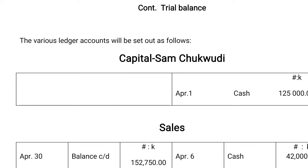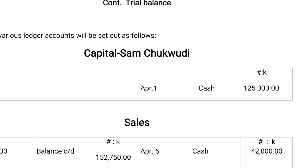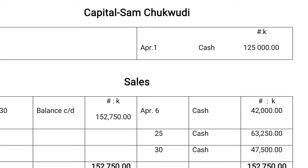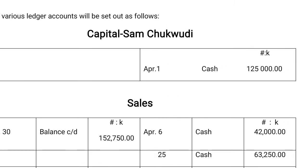If you look at the cash book, we have the capital, sales, Musa, and the lights under the debit side. And at the credit side as well, we have particular furnitures and fixtures, purchases, Musa, wages, and sundry expenses. Now, to prepare our various ledgers, we must bear in mind that all the postings at the debit side of the cash book are going to appear at the credit side of the various ledgers, while the transactions at the credit side are going to appear at the debit side of the various ledgers.